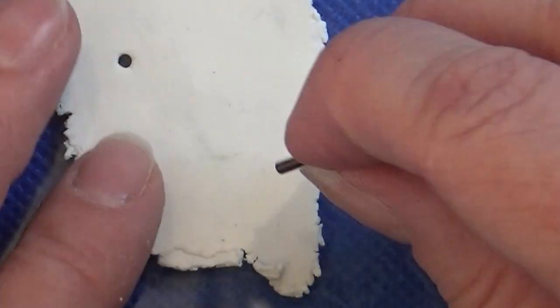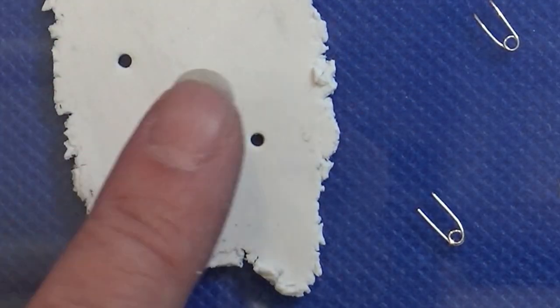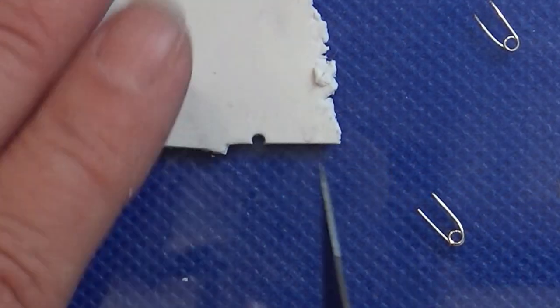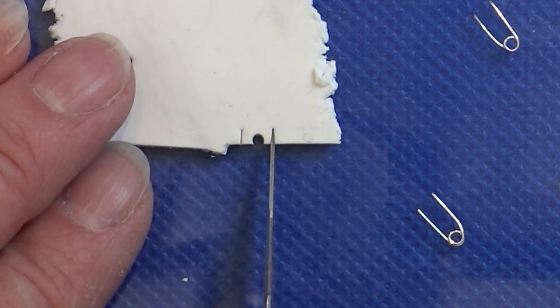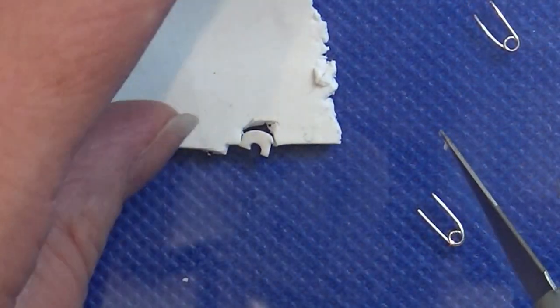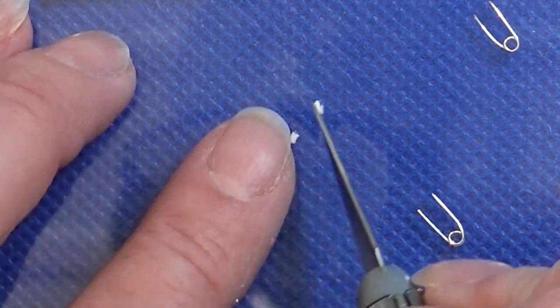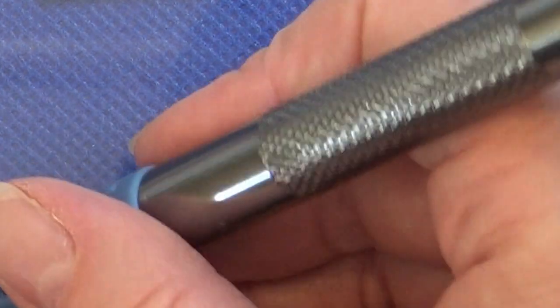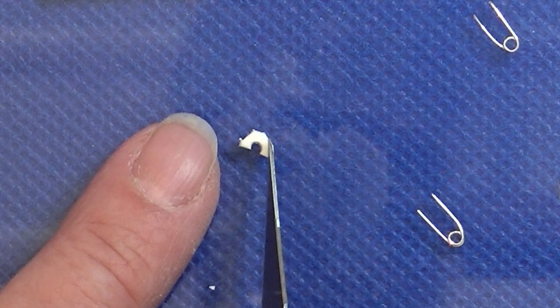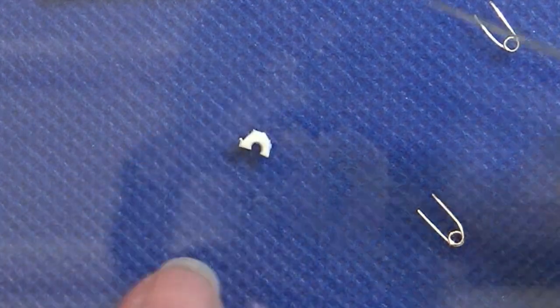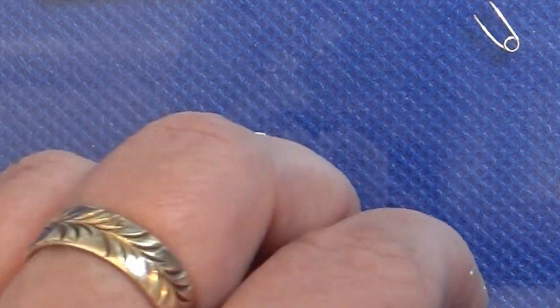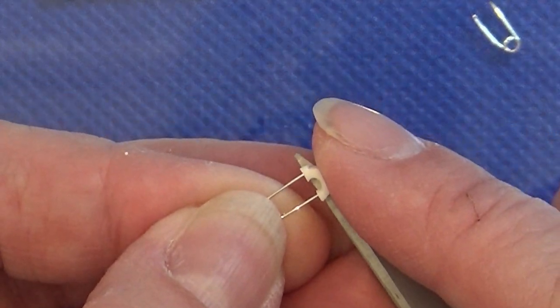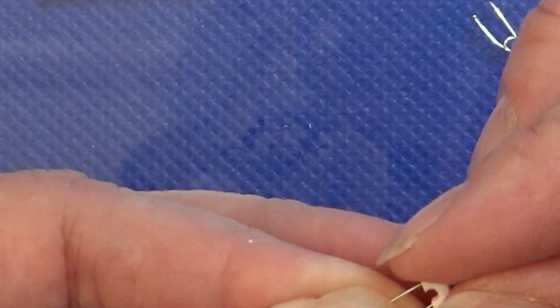Now I'm just making the top for the safety needle from some polymer clay. I rolled it out on a setting five or six and I'm just cutting the little top out.